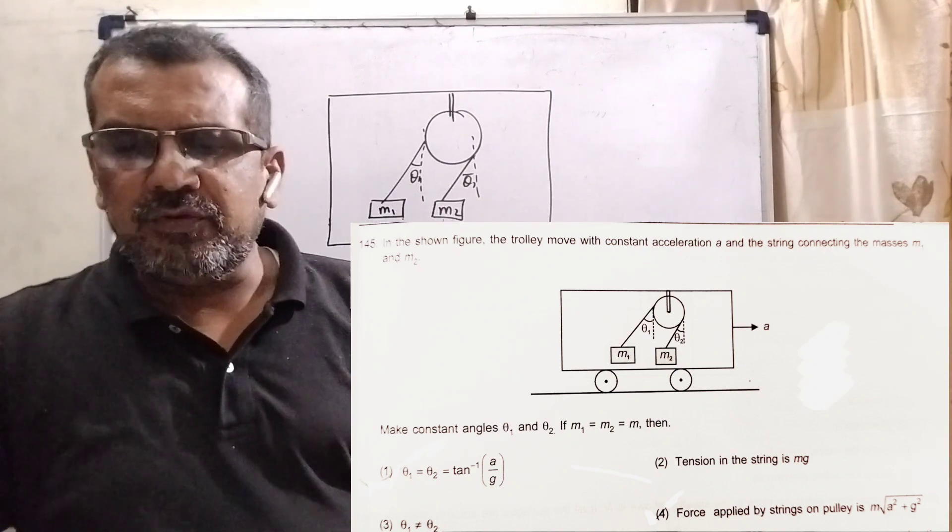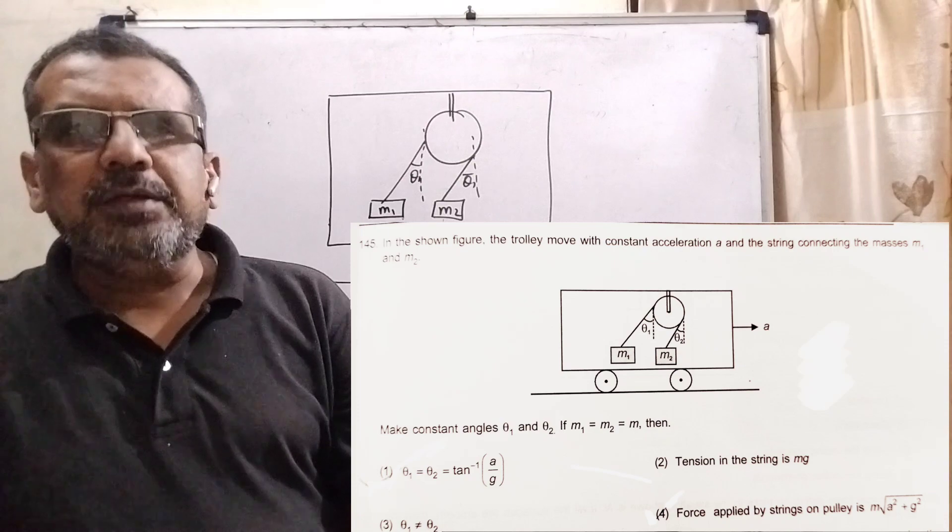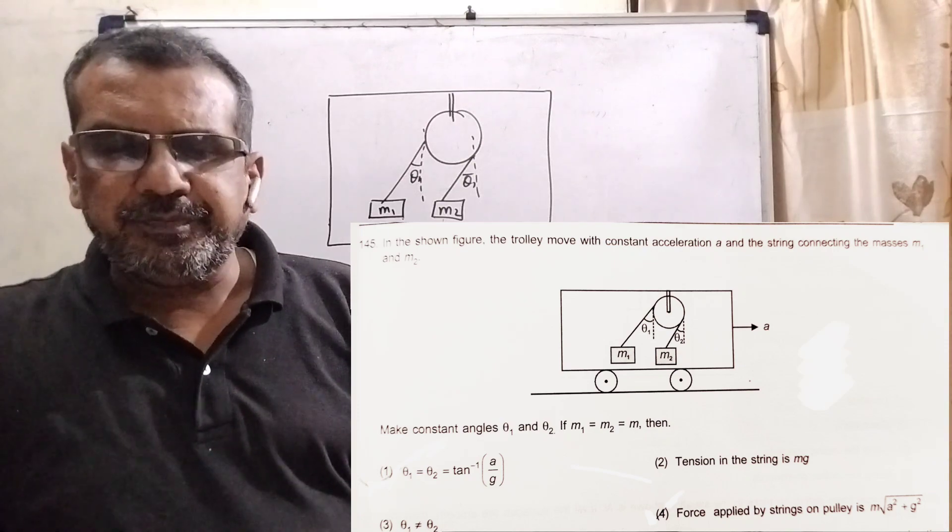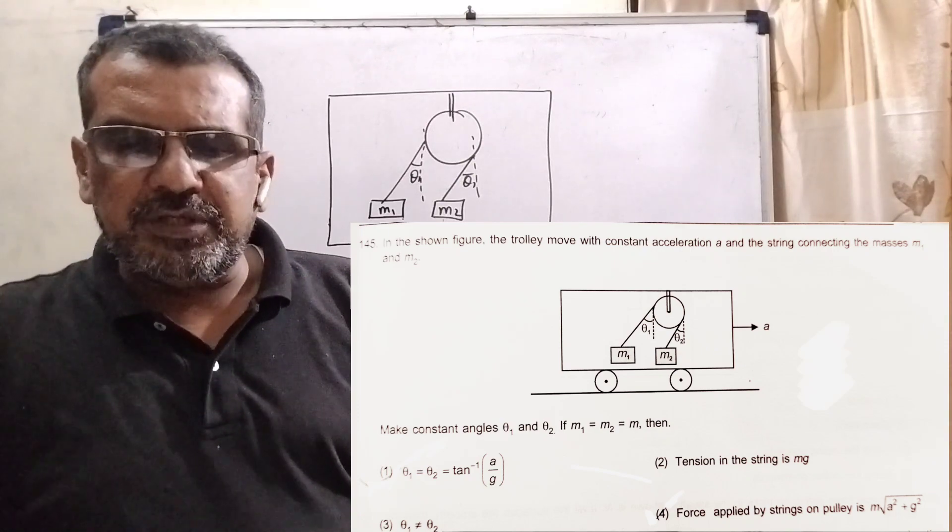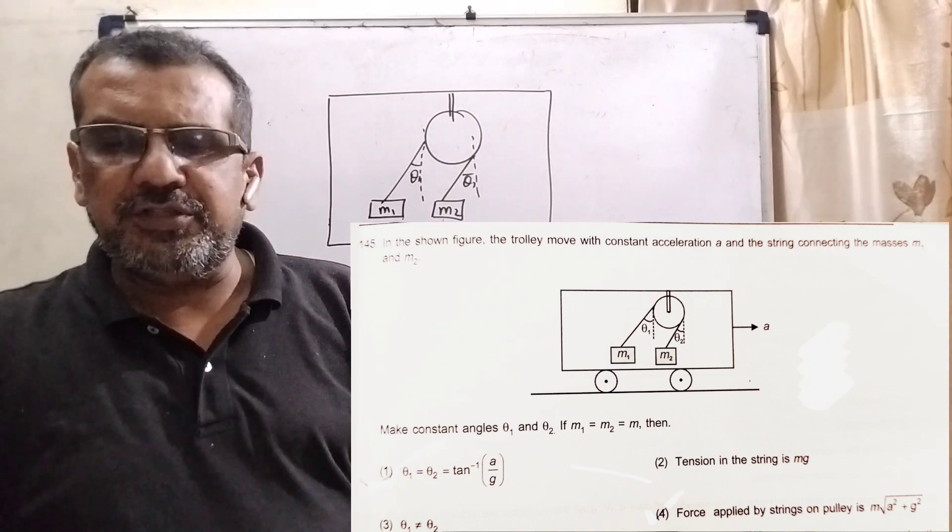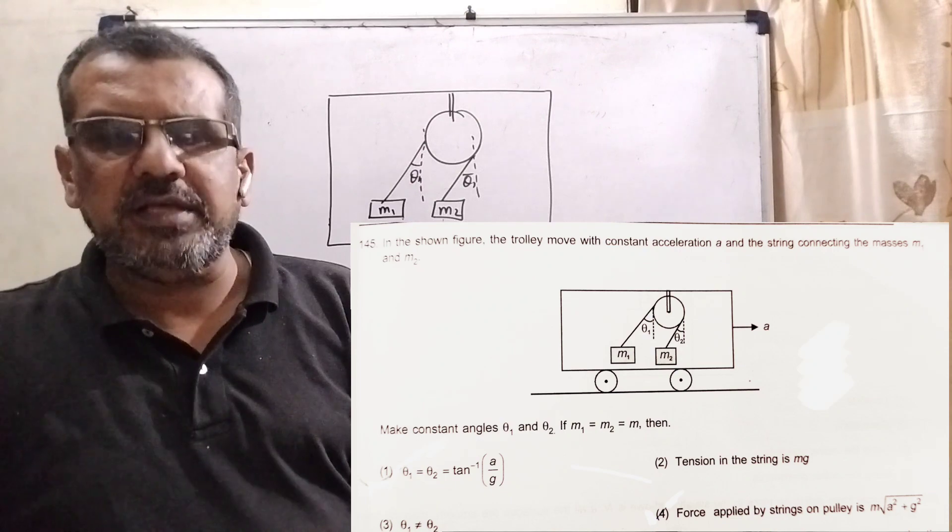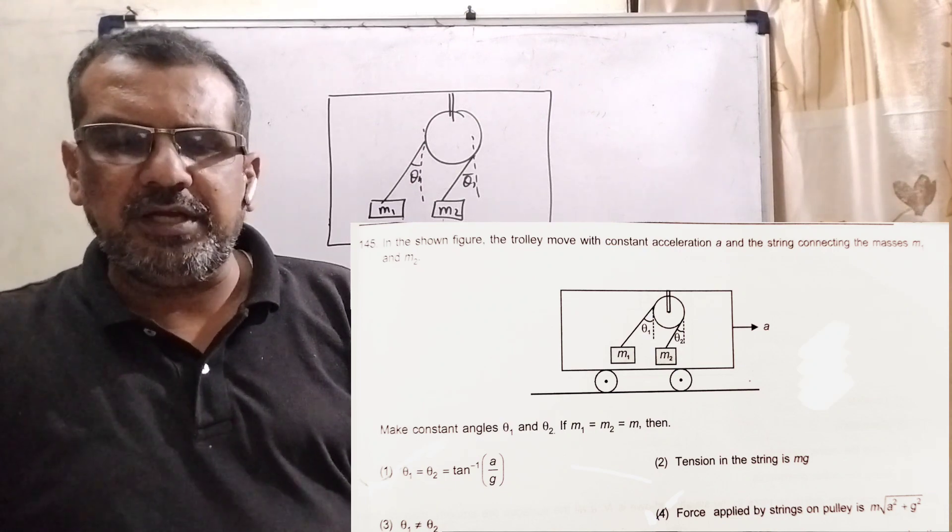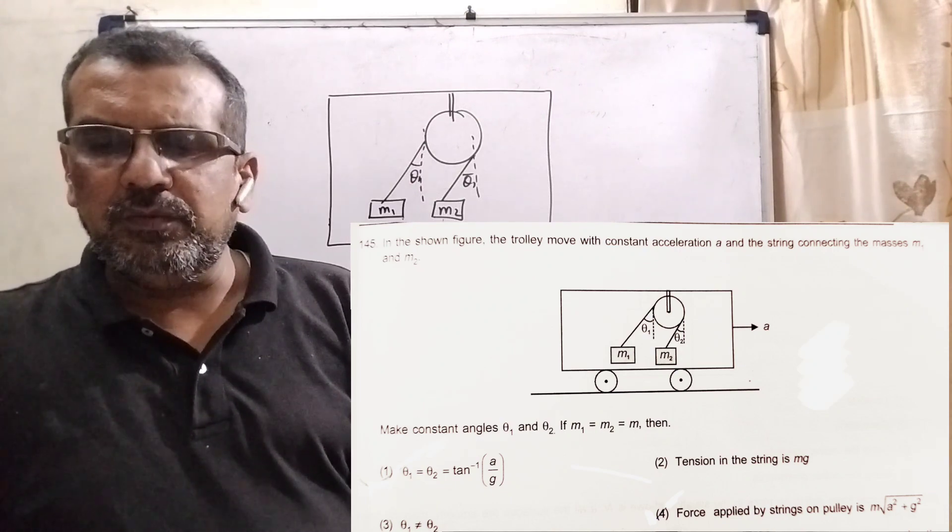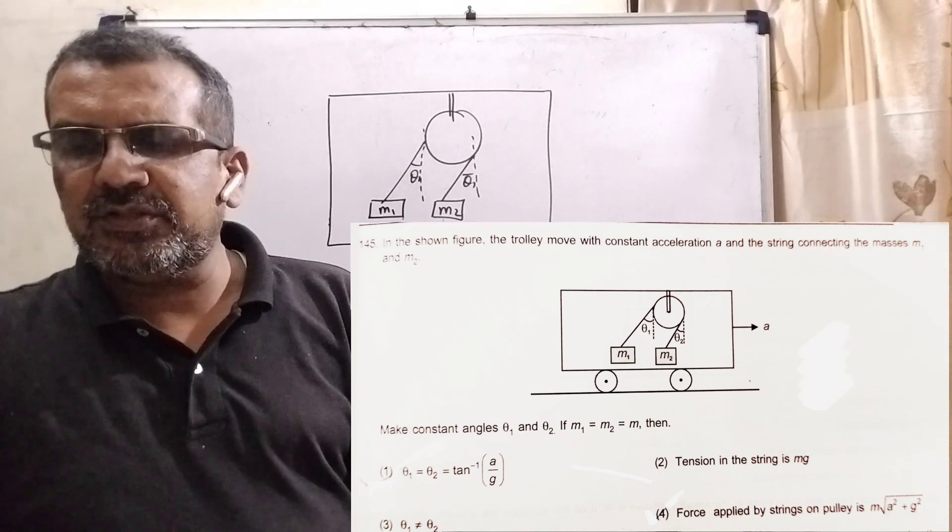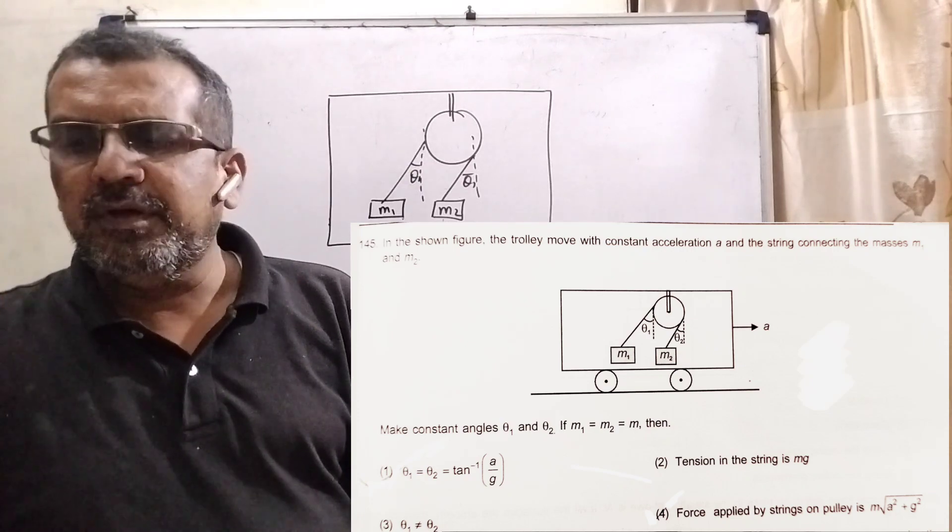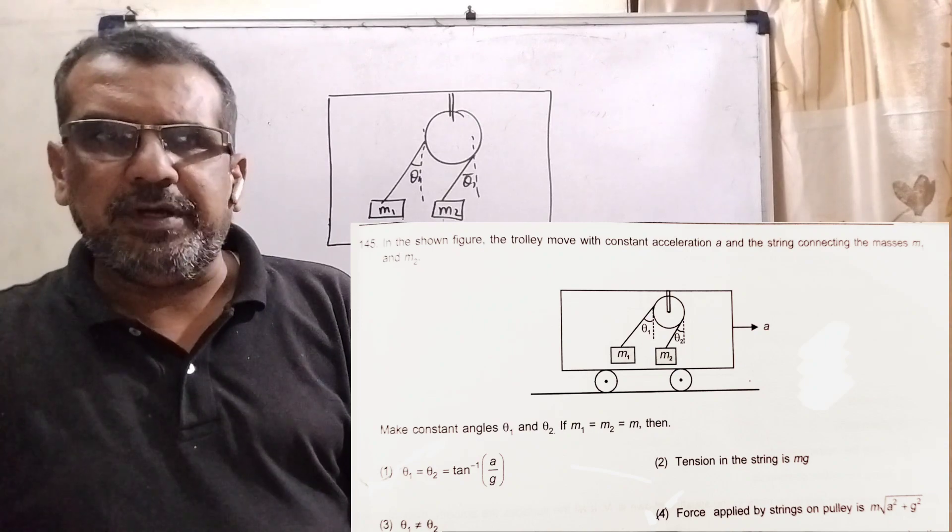First option: theta1 equal to theta2 equal to tan inverse a by g. Option second: tension in the string is mg. Option third: theta1 is not equal to theta2. And option four: force applied by the string on pulley is capital M times root of a square plus g square.